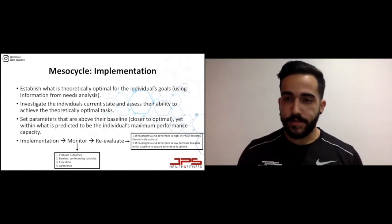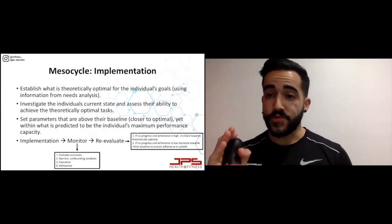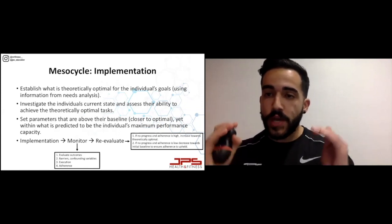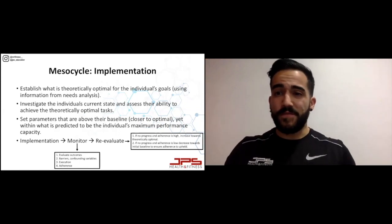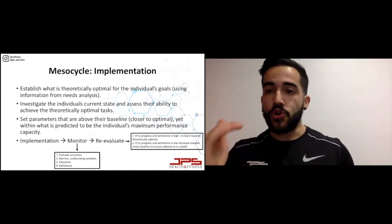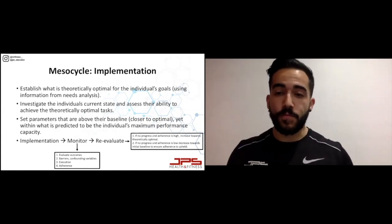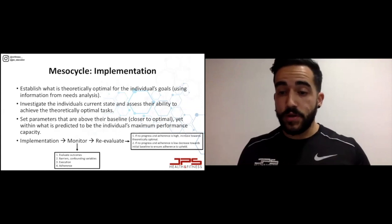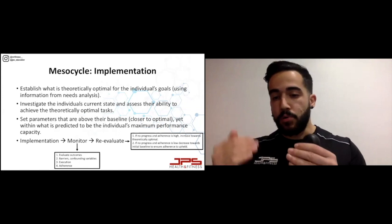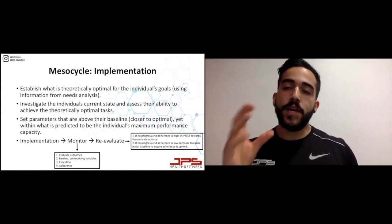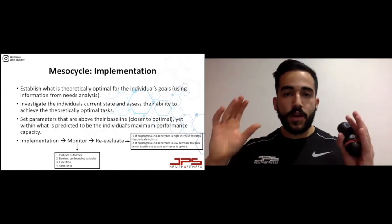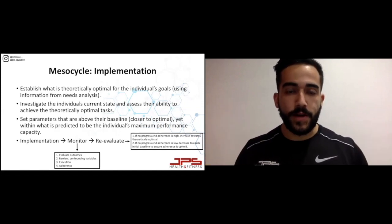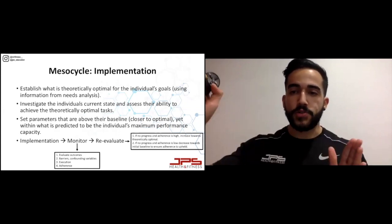When re-evaluating, consider two factors. If no progress has been made over the mesocycle but adherence is high — they've nailed the program — you can increase towards theoretically optimal: push that red dotted line upwards, because you're not doing enough of what is optimal. If no progress has been made and adherence is low, decrease towards what is practically optimal: pull that red dotted line down a little lower. Adherence needs to be upheld — if you're giving clients things they just can't do, they won't get anywhere, and that's bad for motivation too. Over time, try to get closer to what is theoretically optimal.